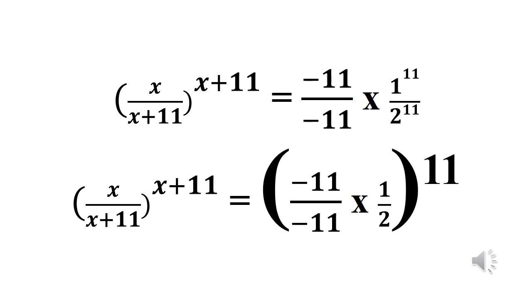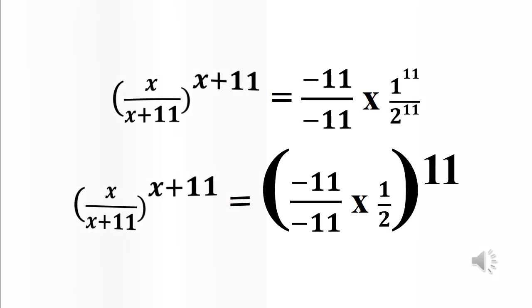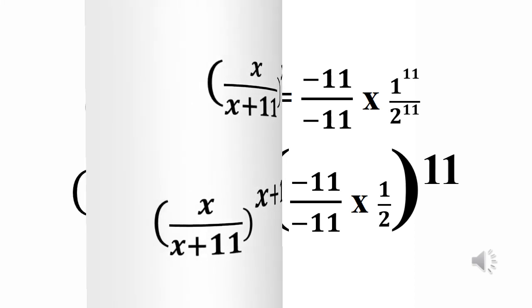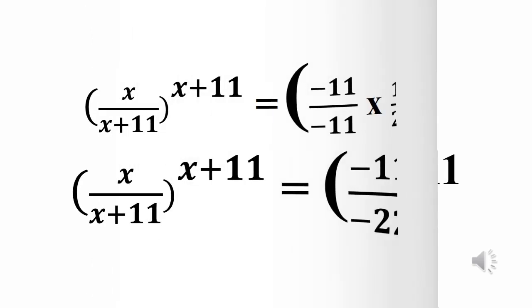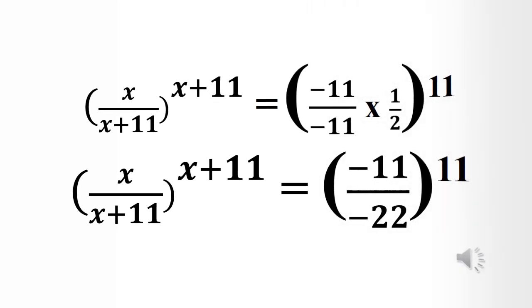Now we factor out the exponent 11 that is common to both the numerator and denominator on the right side. So we have x over (x plus 11), all raised to power (x plus 11), equals the bracket of minus 11 over minus 11 multiplied by 1 over 2, close bracket, all raised to power 11.